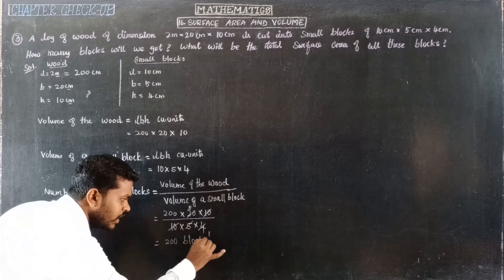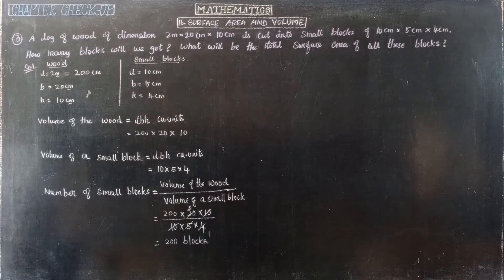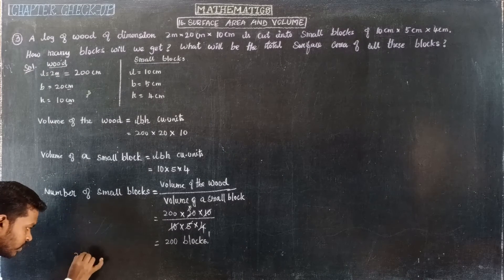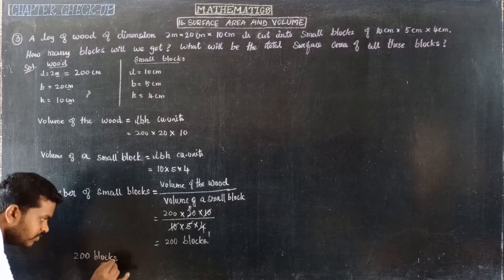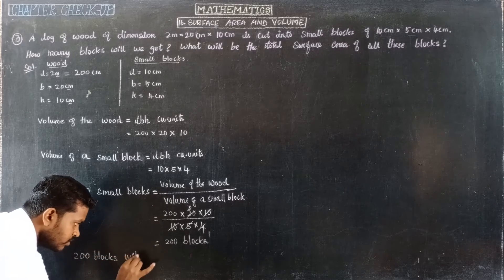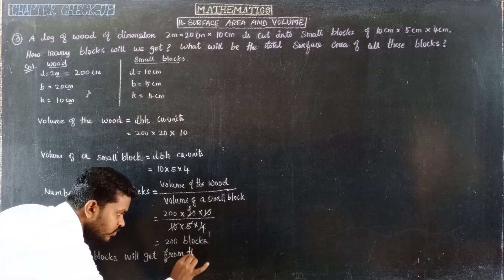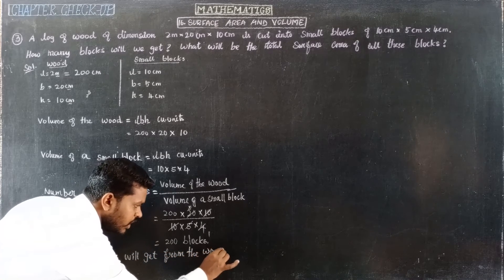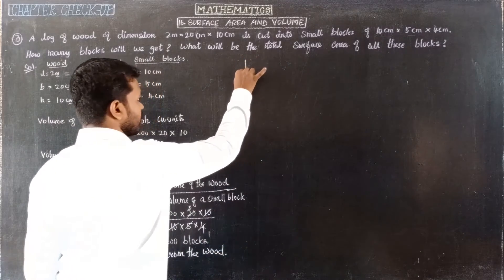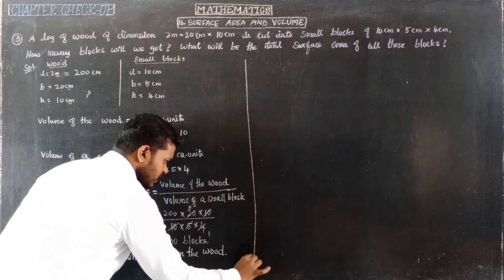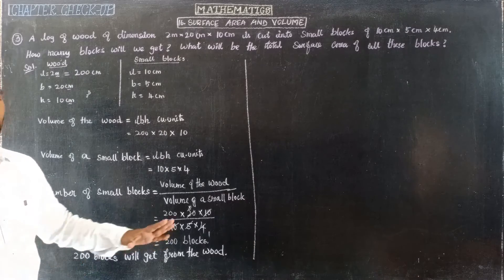We get 200 small blocks from the wood. Now for the second question: what will be the total surface area of all the small blocks?